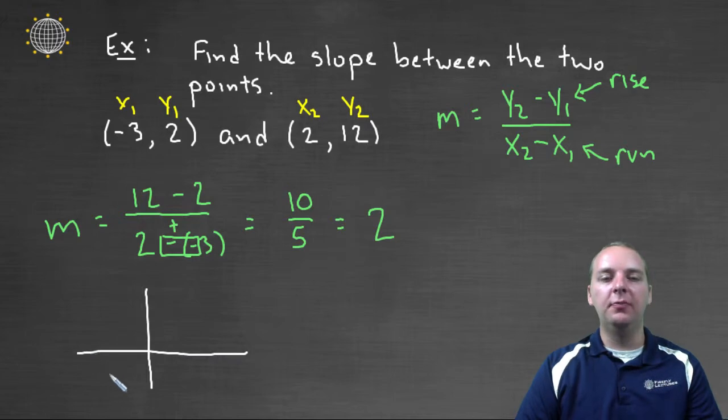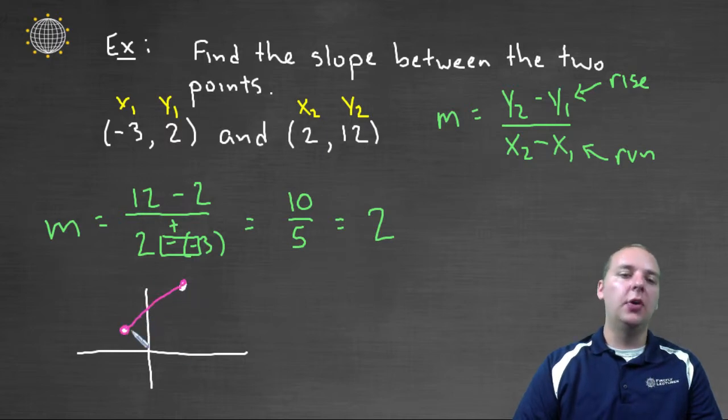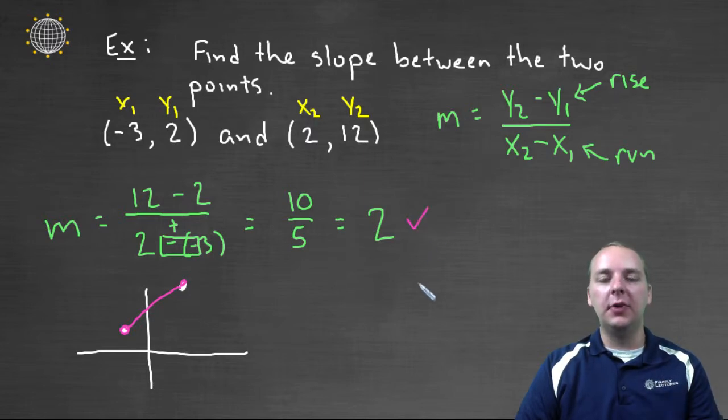And sure enough, if we do just a really rough sketch, not a very detailed sketch at all, but negative three two is right about here, and two comma twelve is right about here. And sure enough, yes, we are rising from left to right, as we go from one point to another. So a slope of two sounds very reasonable. Now before I leave this example and go to the next one, let me make one last remark.